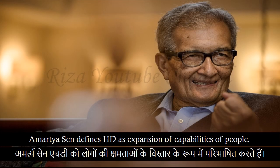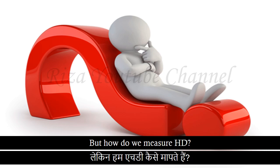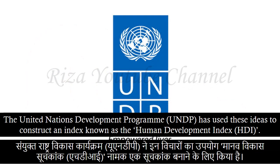Amartya Sen defines Human Development as expansion of capabilities of people. The core capabilities are health, education and purchasing power. But how do we measure Human Development?